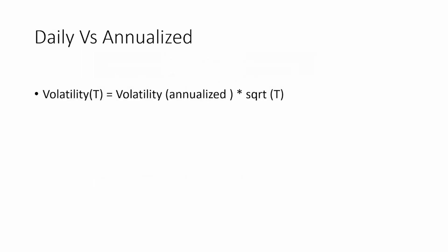You can measure volatility on a daily basis or on an annualized basis, and you can convert between the two. The formula is: daily volatility equals annualized volatility multiplied by the square root of T, where T is the time dimension. This can be done for 10, 20, or 30 days. We assume the number of trading days in a given year is 252, which is quite commonly used.